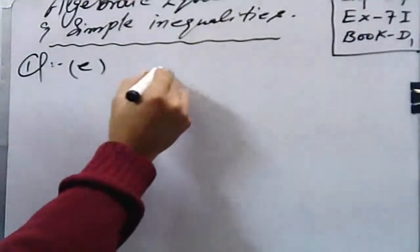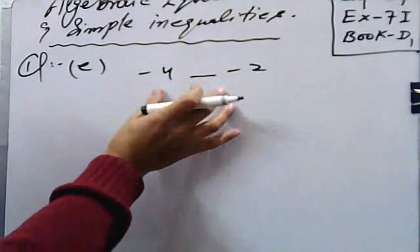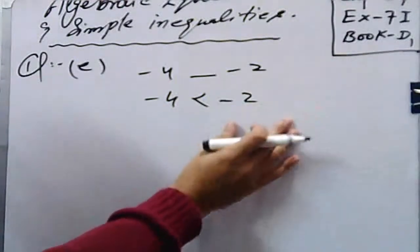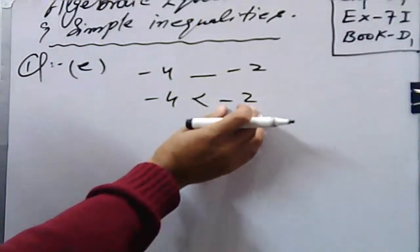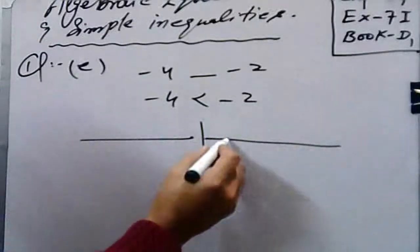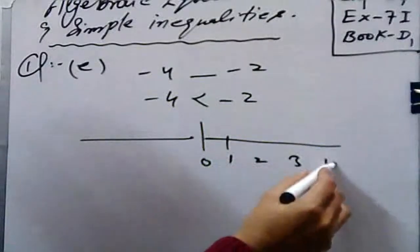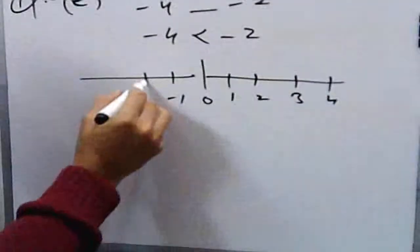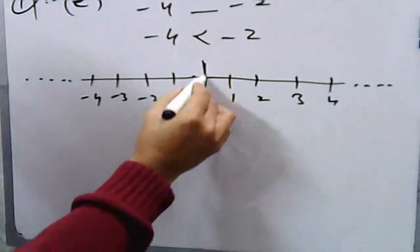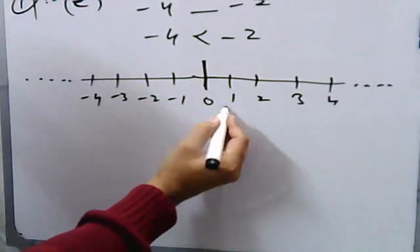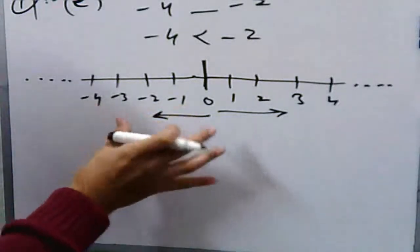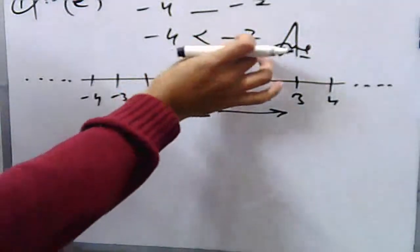In part e: minus 4 dash minus 2. Minus four is always less than minus two. Going right from zero gives plus one, plus two, plus three; going left gives minus one, minus two, minus three, minus four. Using this number line, you can see that minus four is a lesser quantity than minus two.